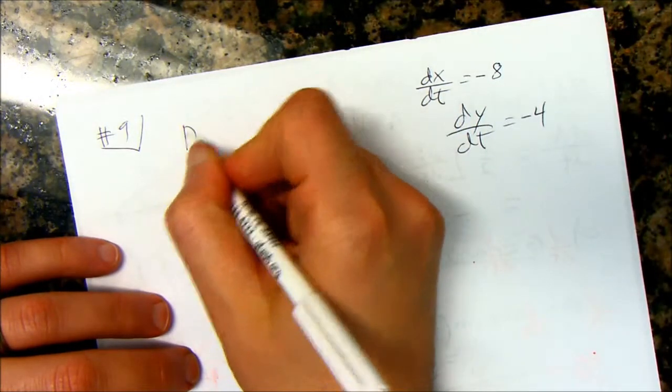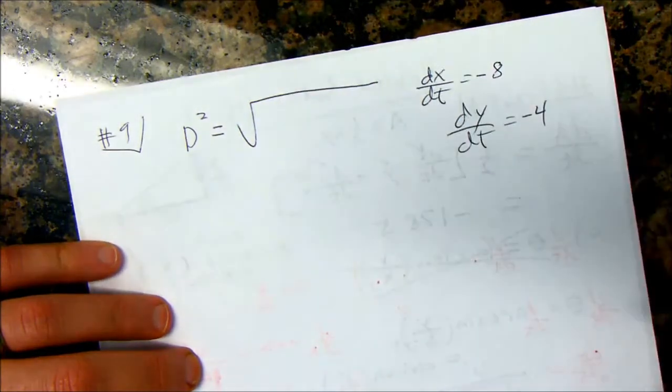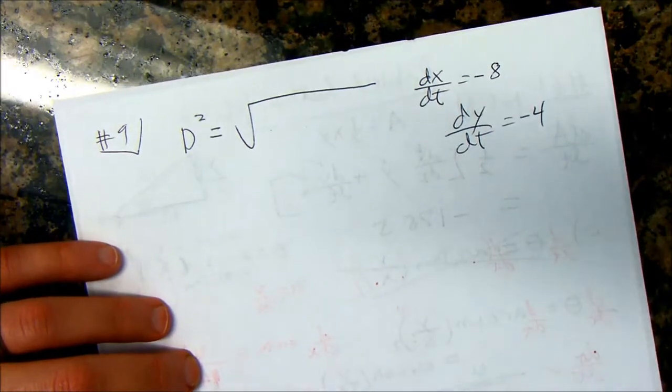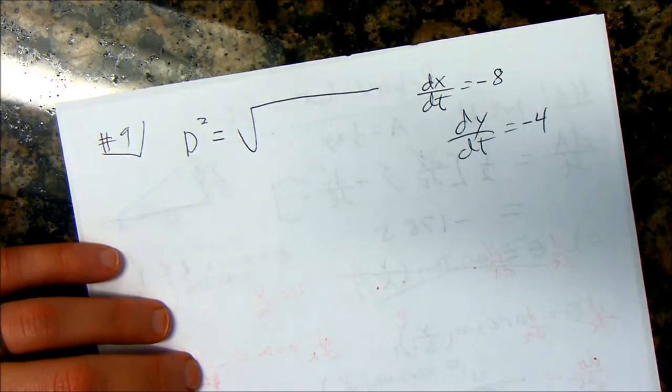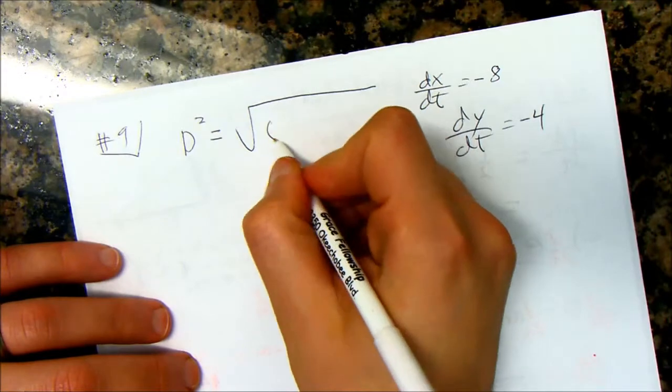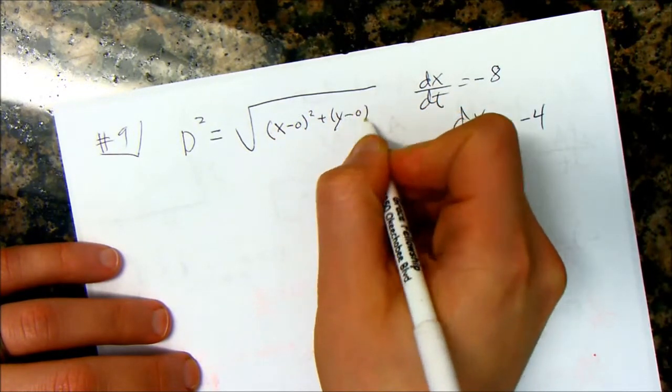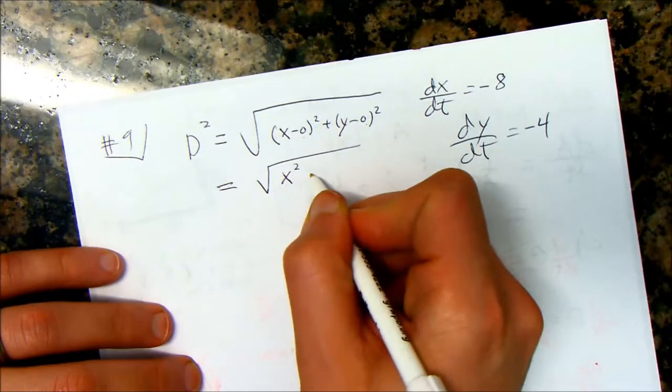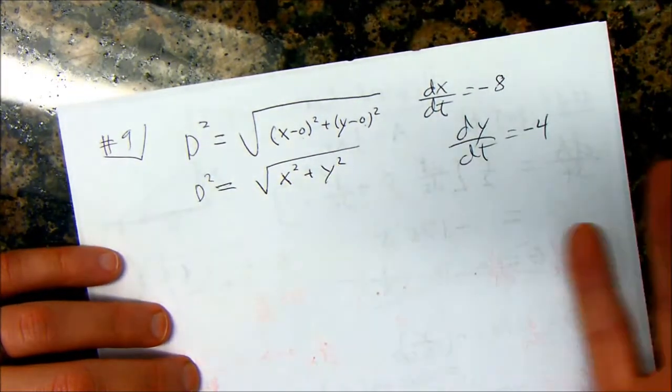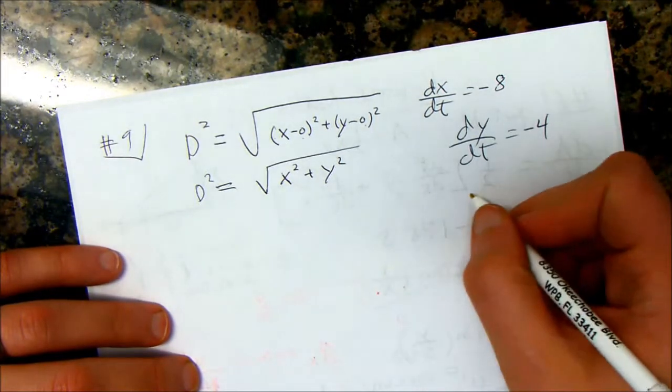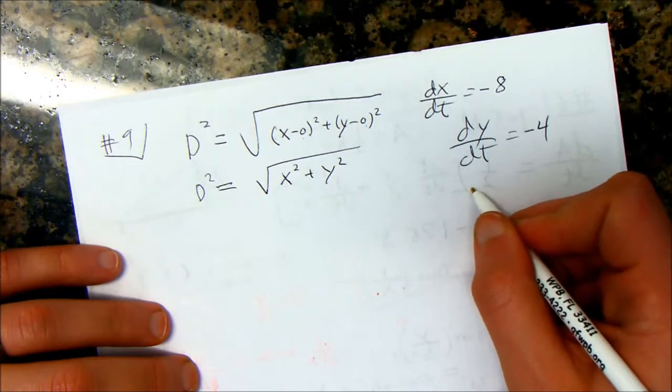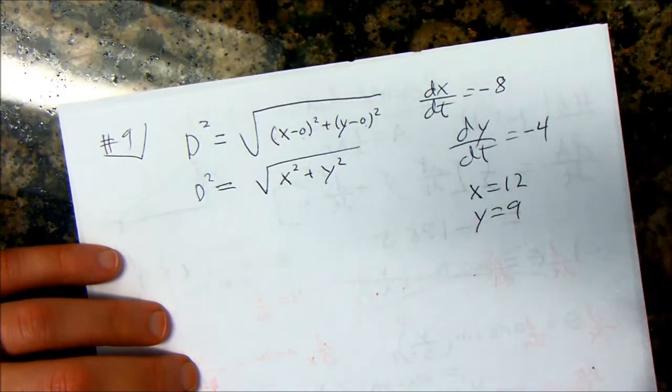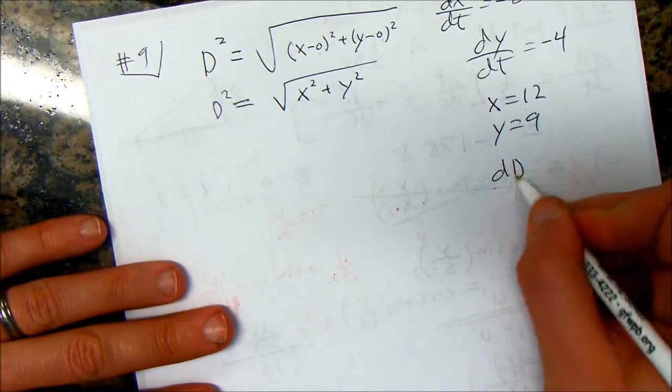All right. Now, number 9 says, the coordinates of a particle in the metric xy plane are differentiable functions with time t. All right. It looks worse than it is. It's just the wording. I write down the distance formula. d squared is equal to x minus x naught squared plus y minus y naught squared, but I have to write the distance formula for this problem.